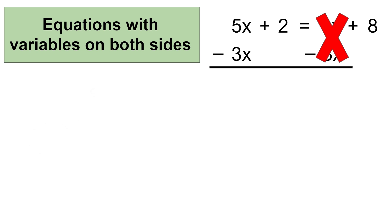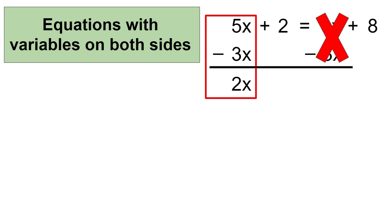So again, since I've subtracted 3x on the right side of the equal sign, I'm going to also subtract 3x on the left side of the equal sign. And 5x minus 3x equals 2x. Now let's bring down the remaining parts of the equation: plus 2 equals 8.